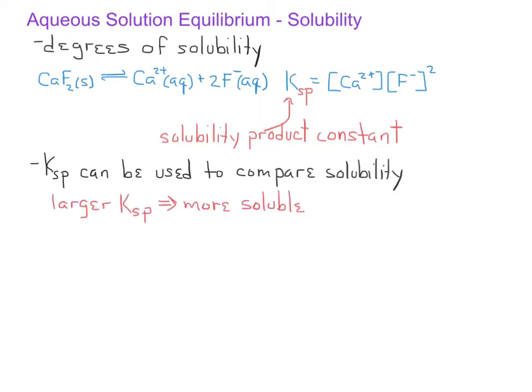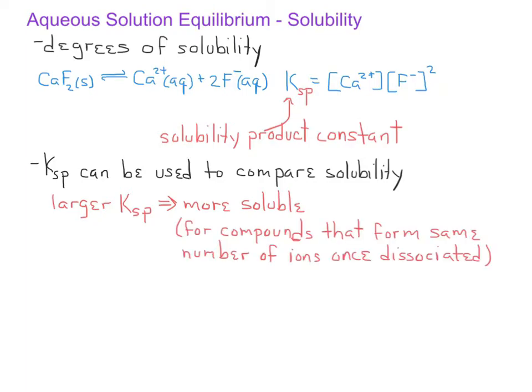The exceptions in this situation would be for ionic compounds that have different types of formulas. For example, comparing calcium fluoride, which dissociates into three ions, would not lead to the exact same solubility estimate as something like sodium fluoride, which would dissociate into two ions. However, as long as the two ionic compounds we're comparing dissociate into the same number of ions, then the Ksp will give us a way to estimate their relative solubility.